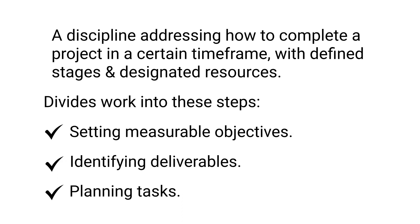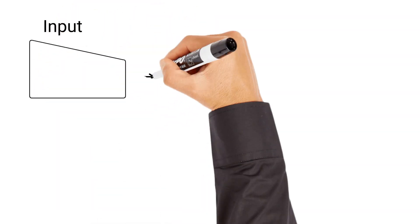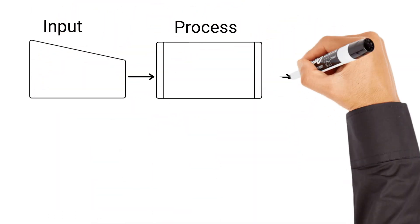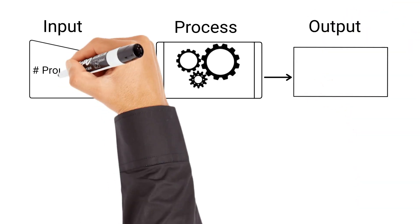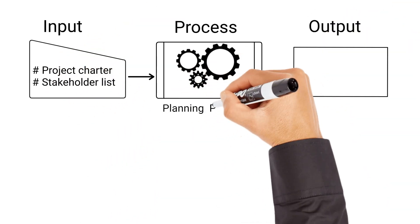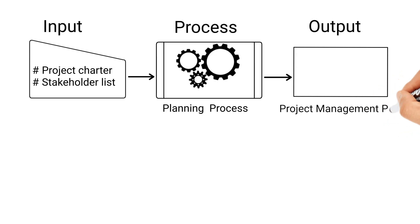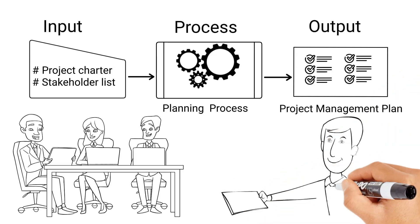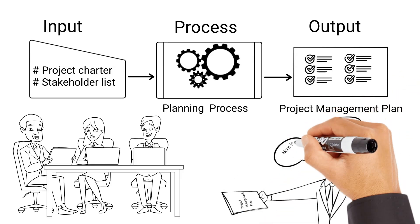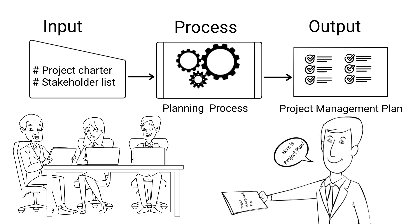These tasks are managed through project management processes. Project planning has basically three components: input, planning process, and output. The project planning process needs inputs like project charter and stakeholder list. Once the project charter and stakeholders are ready, the project manager is ready to utilize the same for planning various aspects of the project. With these inputs, the project manager along with his team categorizes the project planning work usually in 10 areas.